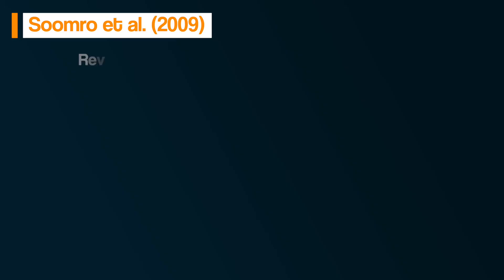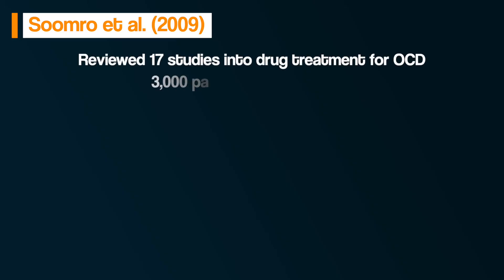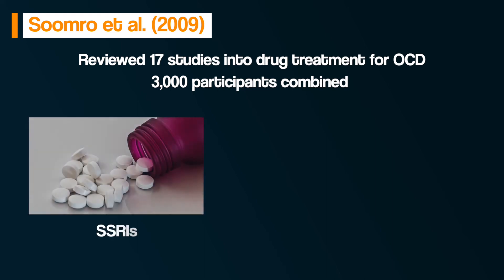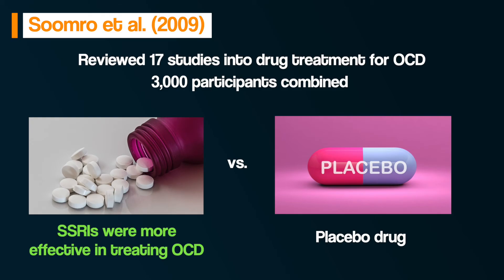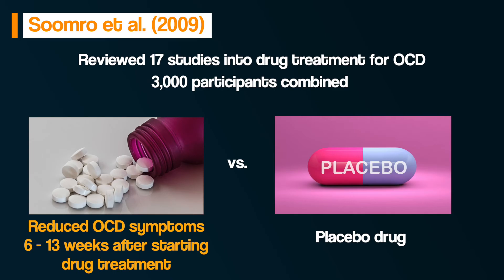Now let's evaluate the biological treatments for OCD. Supporting evidence for the use of drugs to treat OCD comes from the work of Sumro et al. in 2009. They reviewed 17 studies that combined included over 3,000 participants. These studies compared SSRIs to placebos in the treatment of OCD in adults. The results showed that SSRIs were more effective than placebo for OCD, at least in the short term, being specifically effective in reducing OCD symptoms between 6 to 13 weeks after treatment.